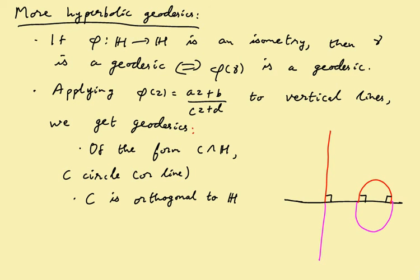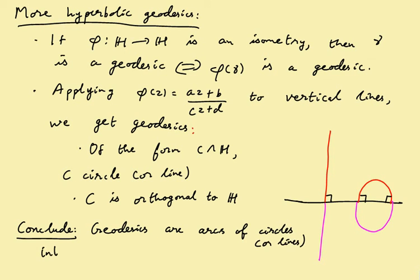So this, so we know that here the red one is a geodesic. So conclusion, from this what we can conclude is exactly that geodesics are arcs of circles, and here circles includes lines, or lines intersecting R orthogonally.